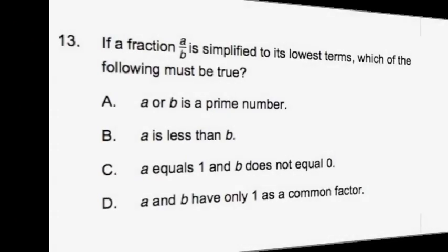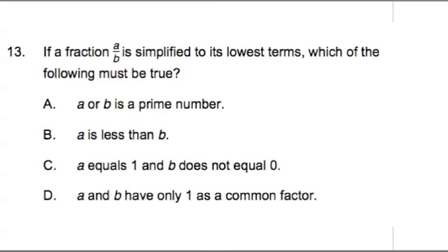Hi team, number 13 on the 53 MTEL practice exam. If a fraction a over b is simplified to its lowest terms, which of the following must be true? A: a or b is a prime number. B: a is less than b. C: a equals 1 and b does not equal 0. Or D: a and b have only 1 as a common factor.